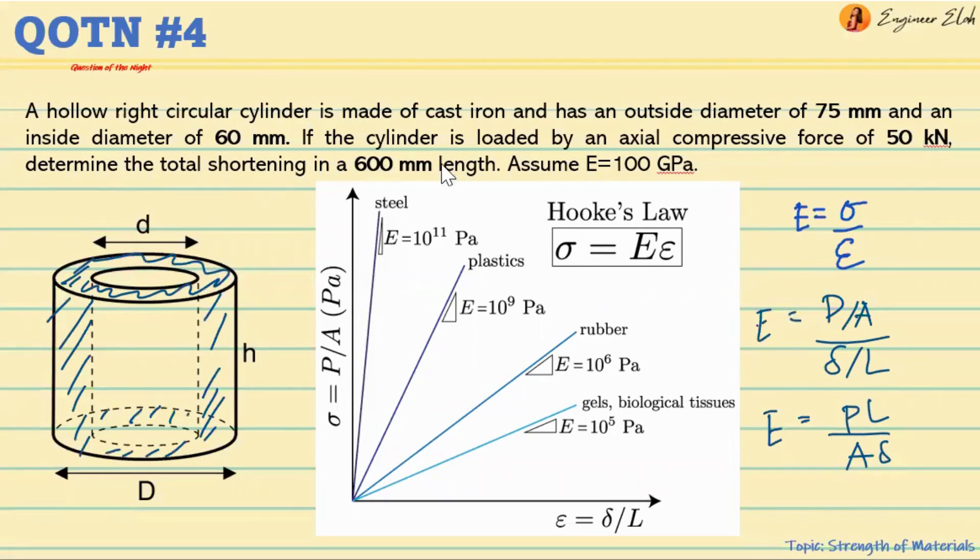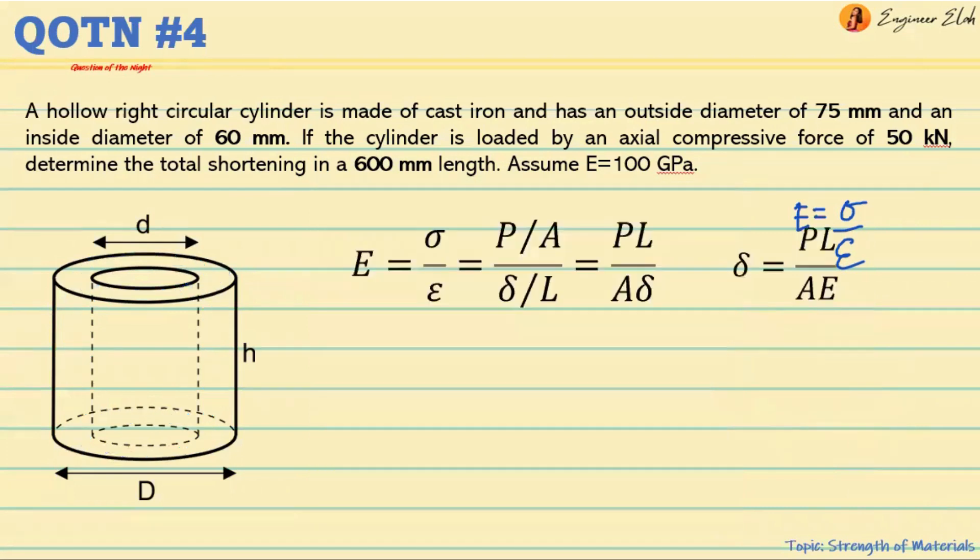For the length, we're given 600 millimeters. For pressure, we're given 50 kilonewtons, and the elongation is actually what we're trying to find. So we're given all these values, and we can rearrange the equation.